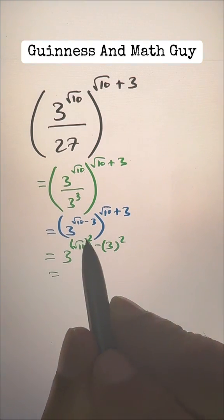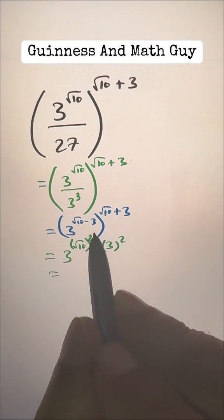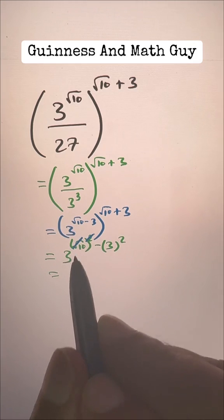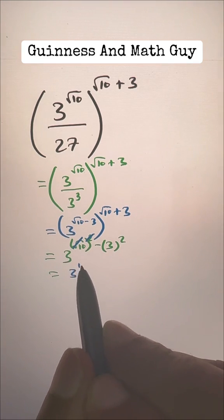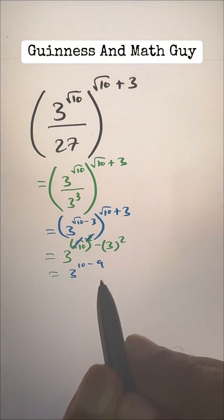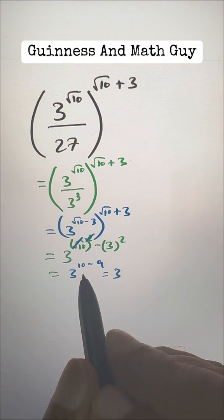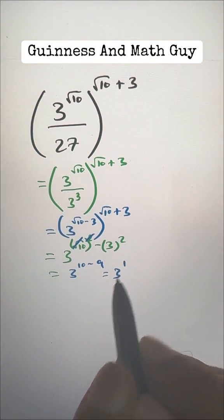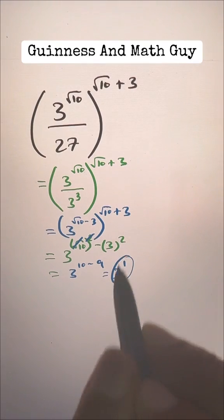The square with square root cancel. So 3 to the power of 10 minus 3 squared is 9, and this becomes 3 to the power 1, 10 minus 9 is 1, and that is 3. That's our answer.